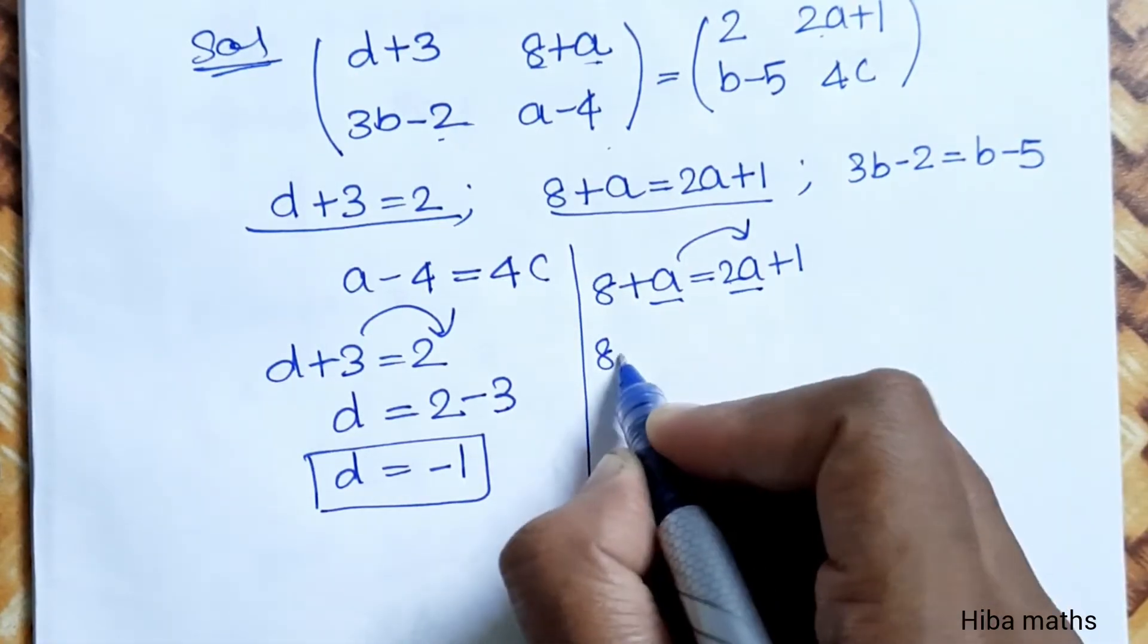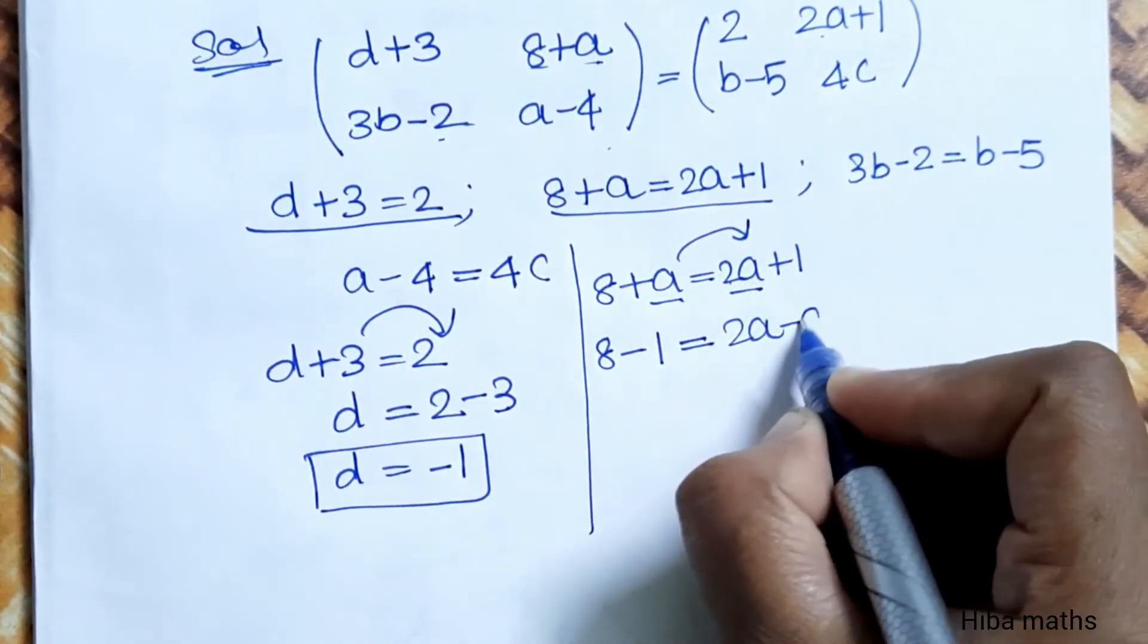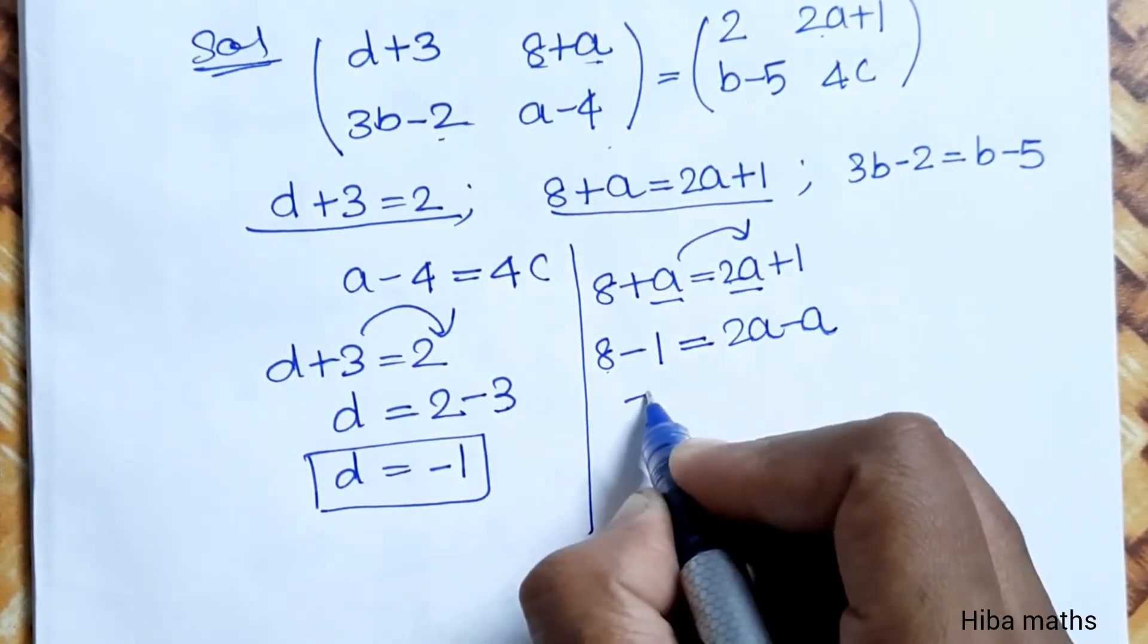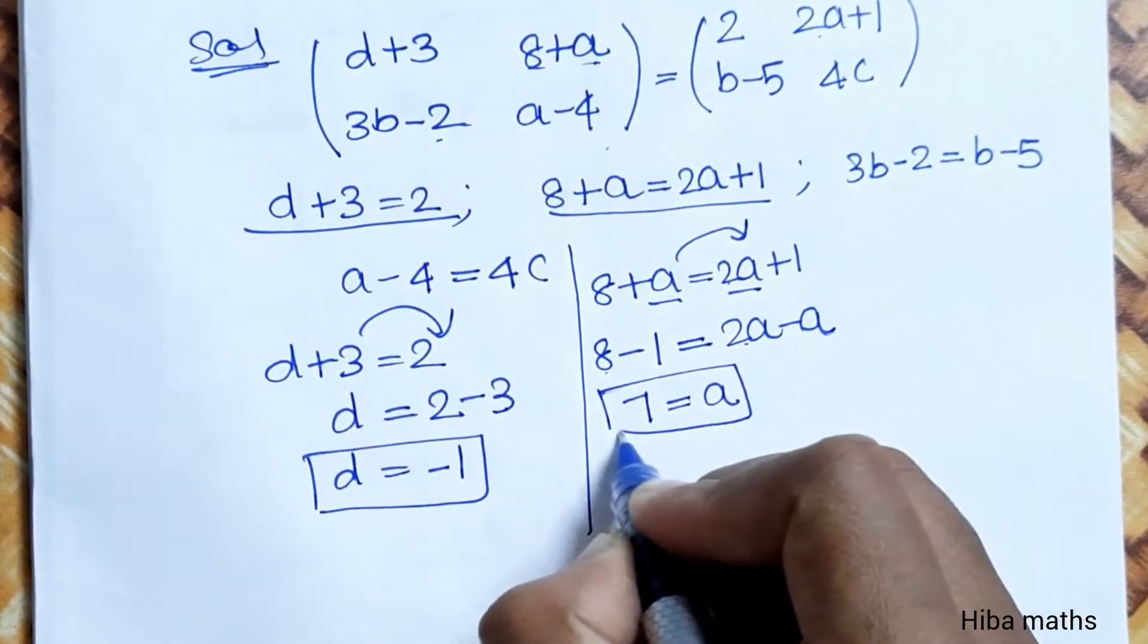A is equal to inside. 2A minus A is equal to A. 8 minus 1 is 7. 2A minus A is equal to A. So A is equal to value 7.